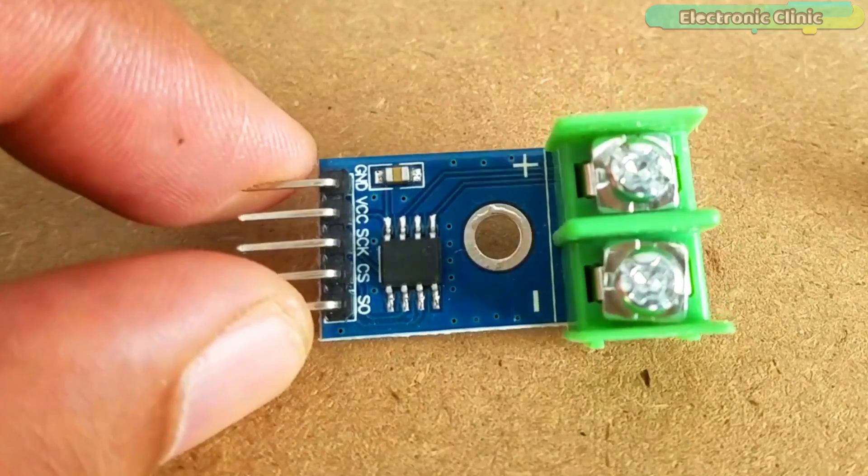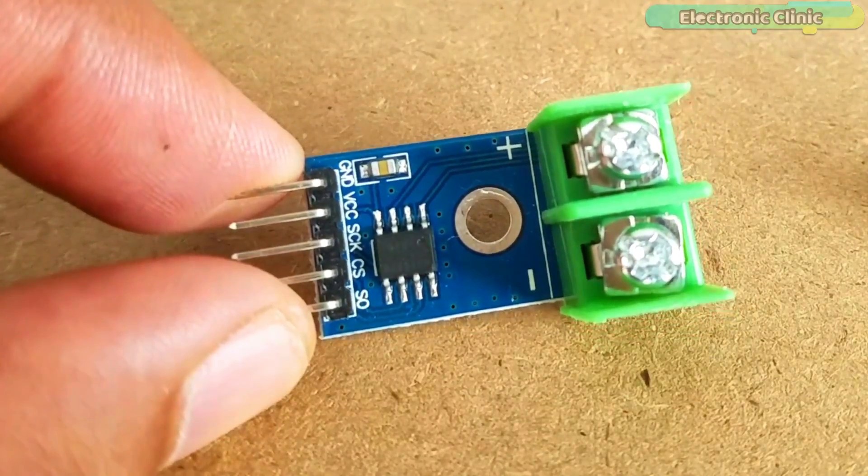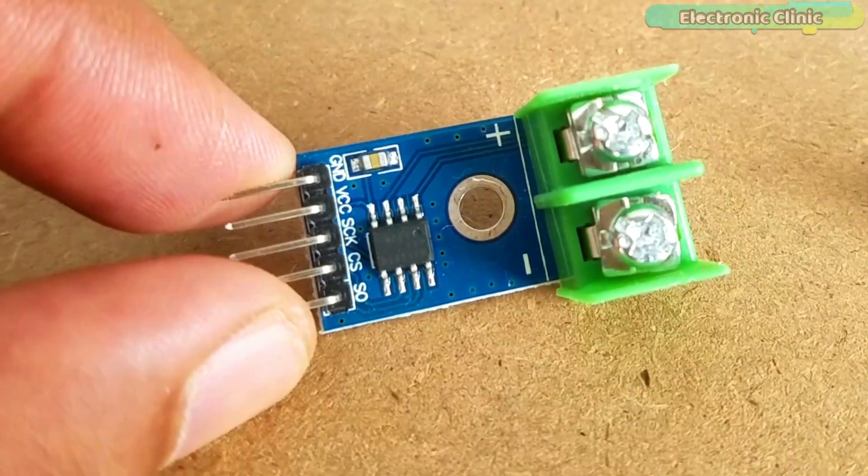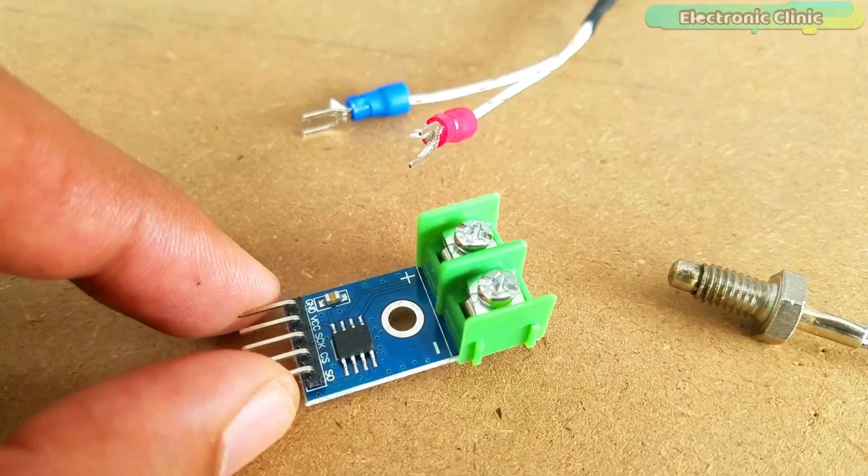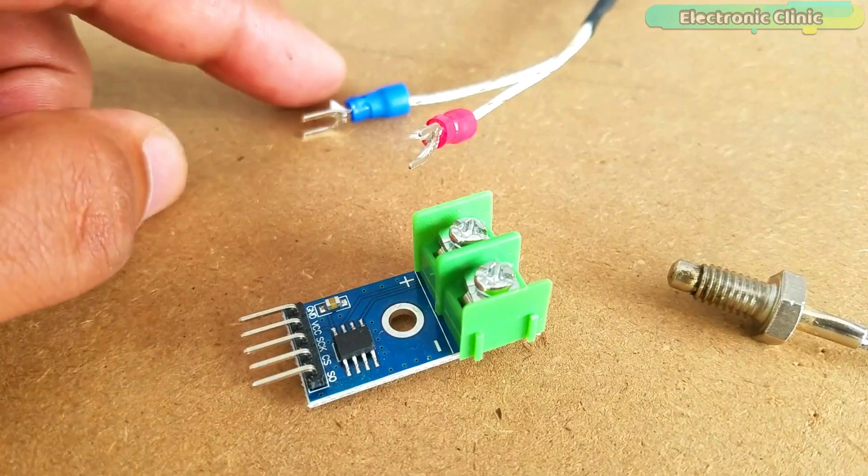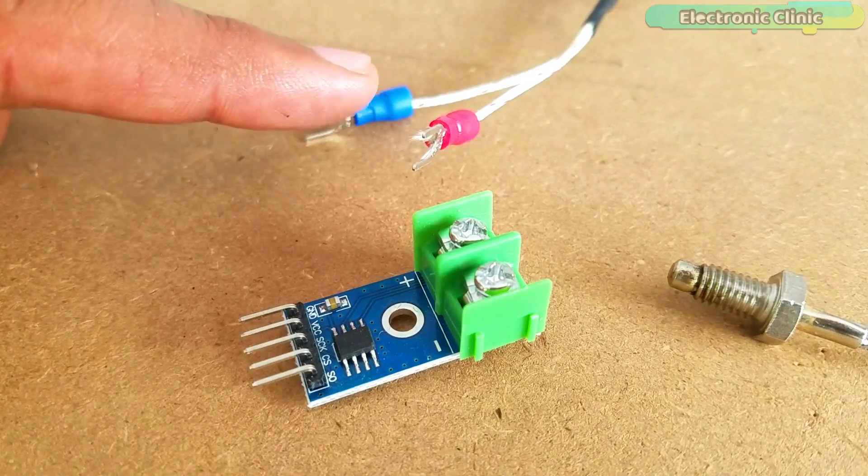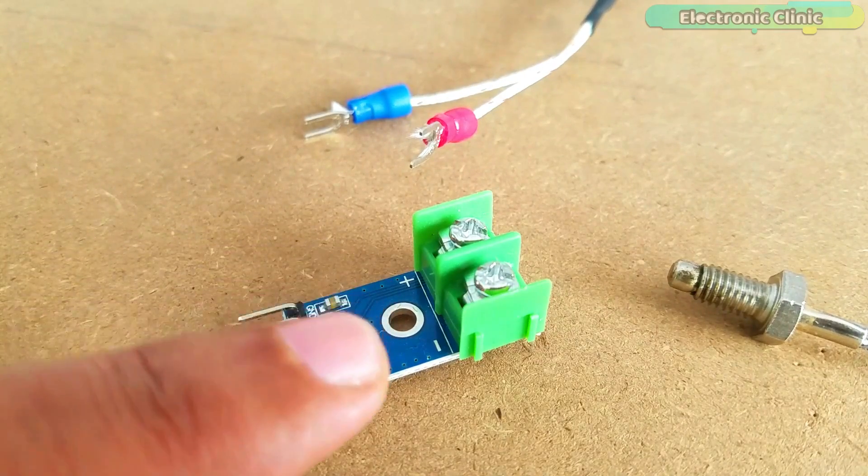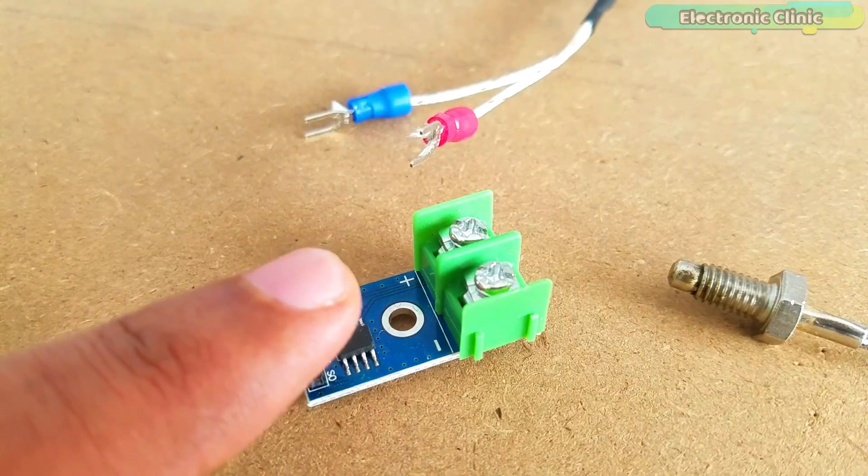As you can see, all the pins are clearly labeled as ground, VCC, SK, CS and SO. The two wires of the thermocouple come with red and blue sleeves. Red is connected with the positive terminal of the MAX6675 module, while the blue wire is connected with the minus terminal of the MAX6675 breakout module.